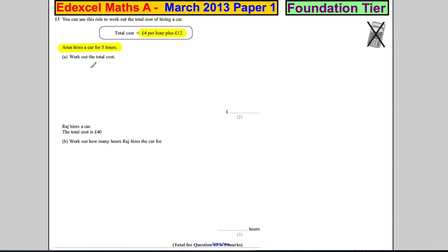Aaron hires a car for five hours. Work out the total cost. It's pretty easy for Aaron. The cost is £4 per hour, so it's 5 multiplied by 4, which equals 20. And then he's got to add on the 12, so 20 plus 12, which equals £32.